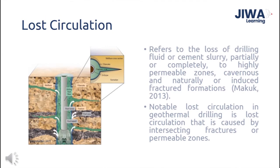Makuk in 2013 notes that lost circulation refers to the loss of drilling fluid or cement slurry, partially or completely, to highly permeable zones, cavernous, and naturally or induced fractured formations. Lost circulation is caused by either poor drilling practices or natural factors associated with the type of formation being drilled. The loss of circulation in geothermal reservoirs, particularly due to natural factors, may indicate intersecting fractures or permeable zones, which are commonly found in geothermal reservoirs.